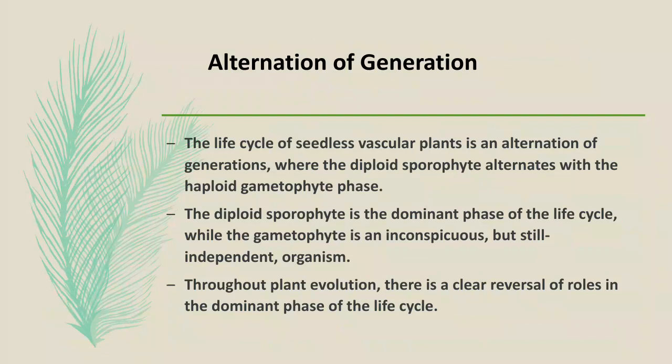Alternation of generations: the life cycle of seedless vascular plants is an alternation of generations, where the diploid sporophyte alternates with the haploid gametophyte phase. The diploid sporophyte is the dominant phase of the life cycle, while the gametophyte is an inconspicuous but still independent organism. Throughout plant evolution, there is a clear reversal of roles in the dominant phase of the life cycle.